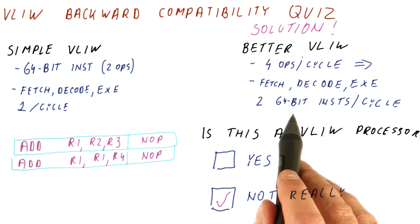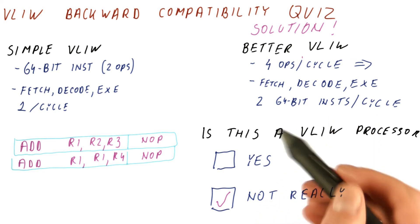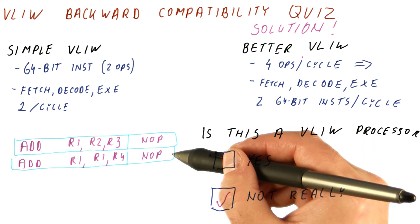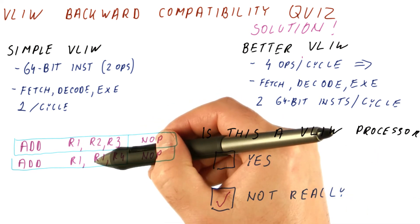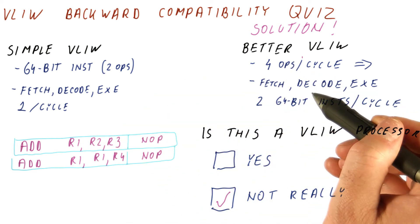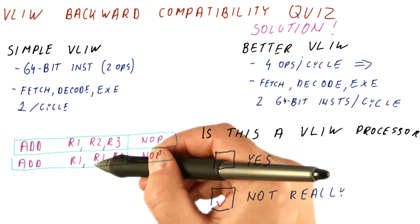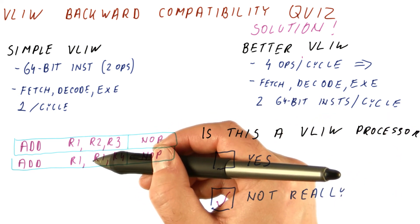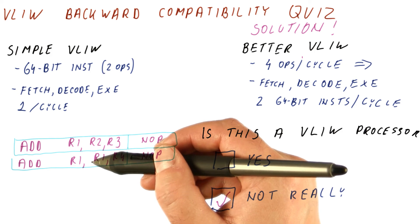it might easily fetch these two and try to do them in the same cycle, thus violating this dependence. So this type of processor is not a true VLIW processor because it would have to check for dependencies, which makes it similar to a normal superscalar processor.